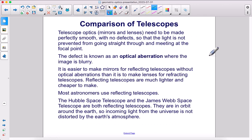Telescope optics, the mirrors and lenses, need to be made perfectly smooth with no defects, so that the light is not prevented from going straight through and meeting at the focal point. The defect is known as an optical aberration where the image is blurry. It is easier to make mirrors for reflecting telescopes without optical aberrations than it is to make lenses for refracting telescopes.